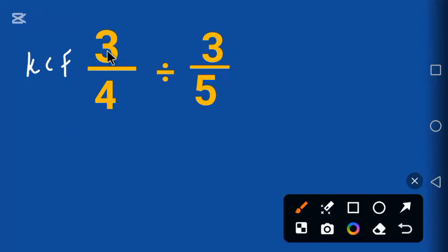K for keep. We are keeping this one by writing it again. That's 3 over 4. C stands for change. We are changing division to multiplication.